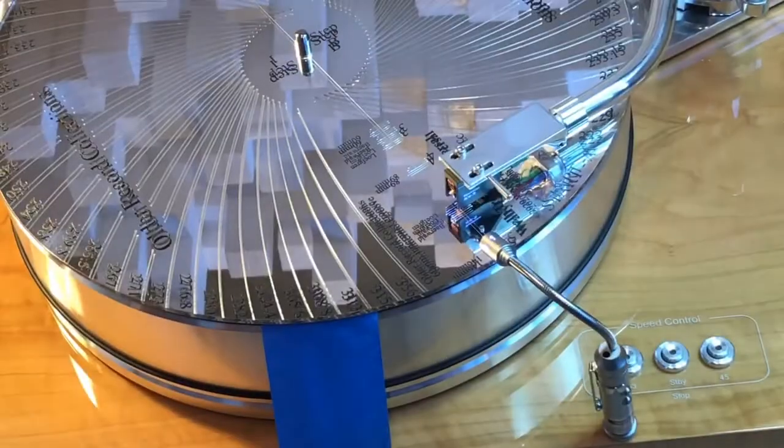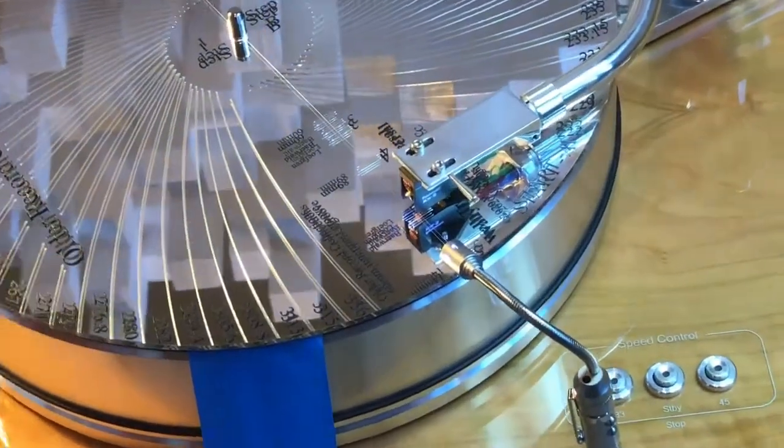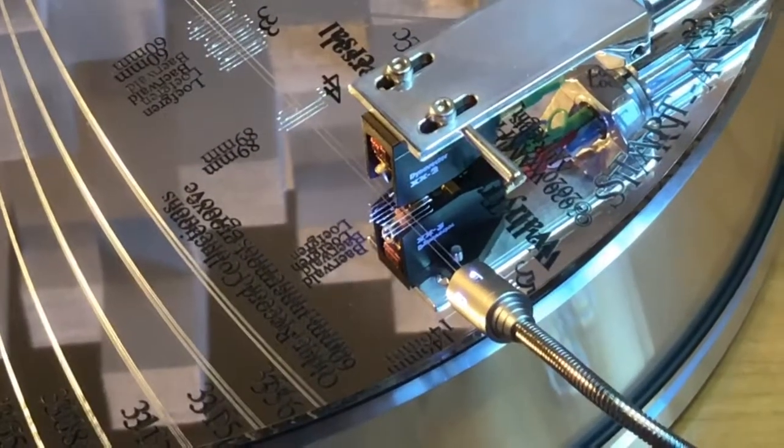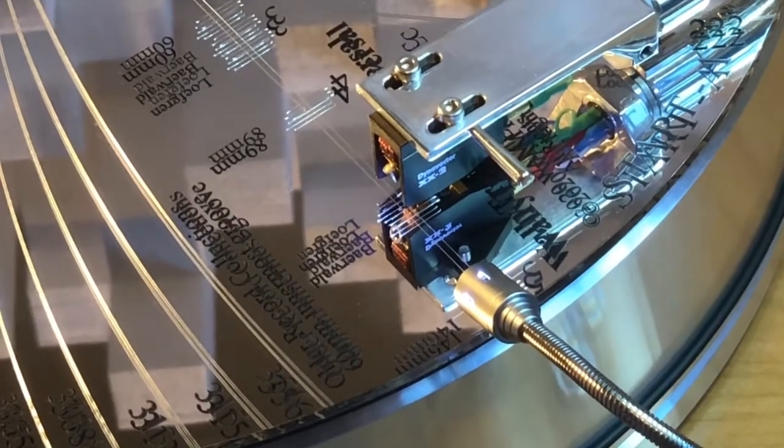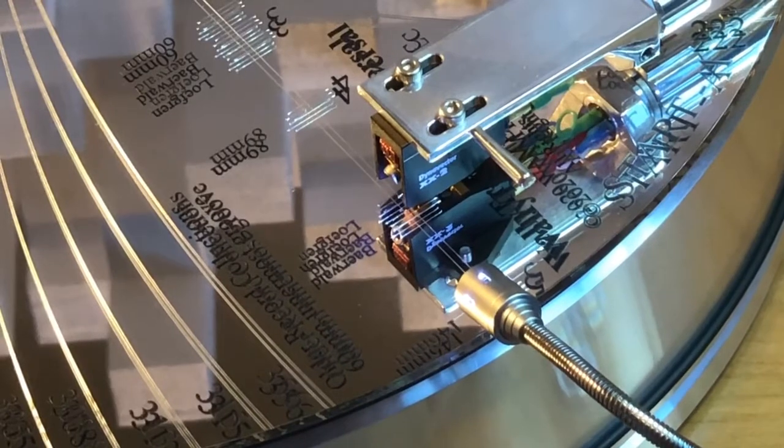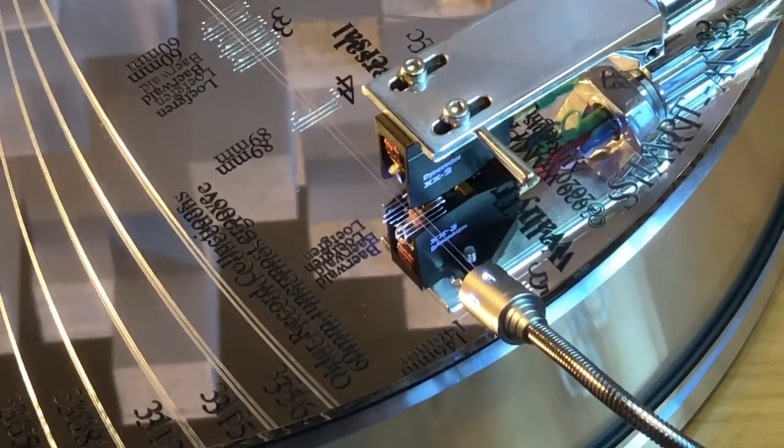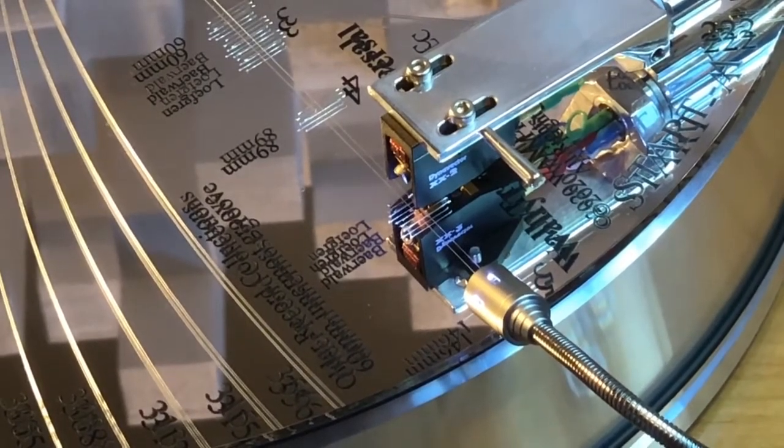So now, arguably, aligning the cantilever is perhaps even more important than getting the stylus to fall perfectly into that etch mark of the arc. At this point, what we'll want to do is we'll want to make sure that as we're looking at this cantilever, we have our eye in the right place. And that's why a mirrored protractor is so very important.